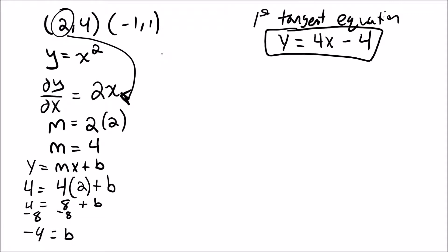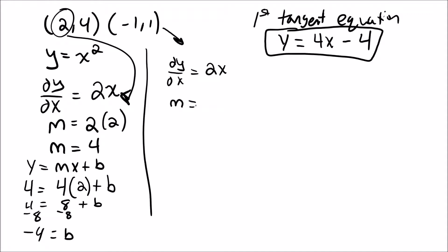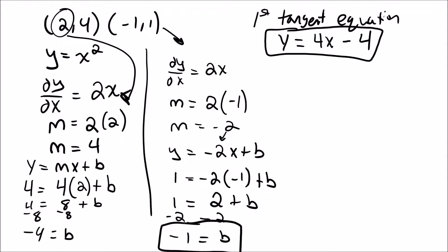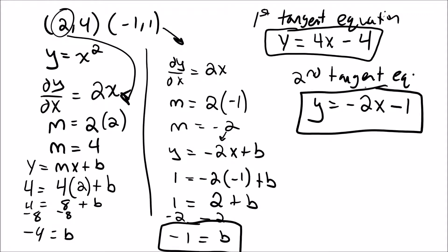Now for the second tangent using the point (-1, 1). Using the derivative 2x, the slope at x equals negative 1 is 2 times negative 1, which is negative 2. Substituting into y equals mx plus b: 1 equals negative 2 times negative 1 plus b, so 1 equals 2 plus b, giving b equals negative 1. The second tangent equation is y equals negative 2x minus 1.